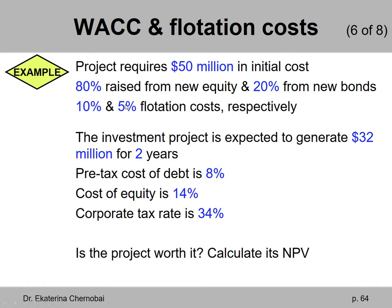Let's look at the following example, using the same numbers as the previous slide. A project requires $50 million in initial cost. 80% will be raised from new equity and 20% from new bonds. The flotation cost for equity is 10% and for bonds is 5%. Additionally, the project is expected to generate $32 million for two years. The pre-tax cost of debt is 8% per year, the cost of equity is 14% per year, and the corporate income tax rate is 34%. Is the project worth it?